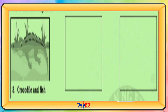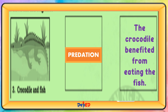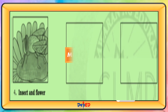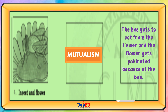Crocodile and fish — this is predation. The crocodile benefited from eating the fish. Insects and flower — this is mutualism. The bee gets to eat from the flower and the flower gets pollinated because of the bee.